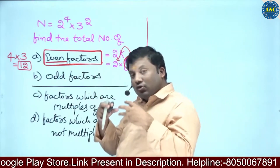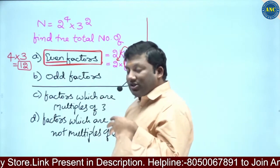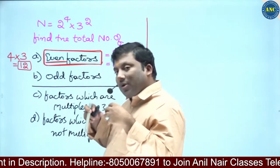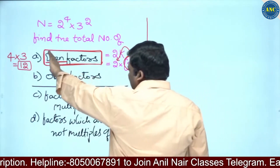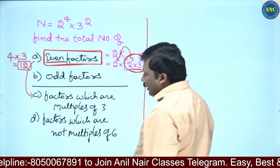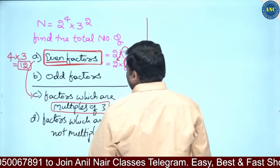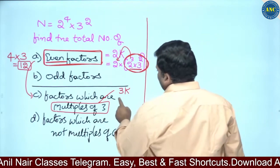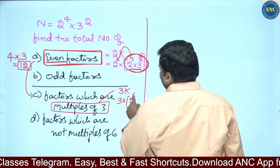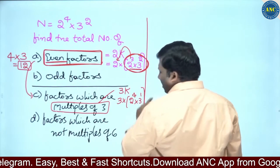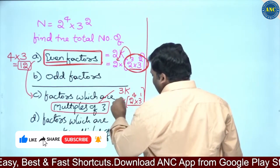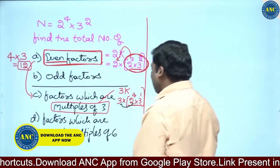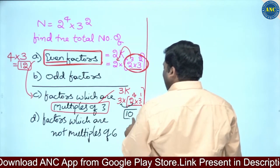Even factors are factors divisible by 2, or equivalently multiples of 2. The same concept extends to factors which are multiples of 3. Any multiple of 3 is written as 3 into something. So we write 3 into — and the remaining part is 2 power 4 into 3 power 1. These are numbers being multiplied by 3. How many factors? 5 twos are 10 — so there are 10 factors which are multiples of 3.